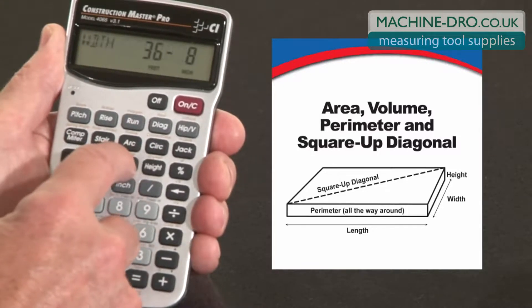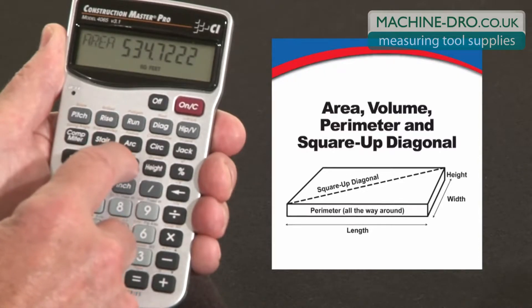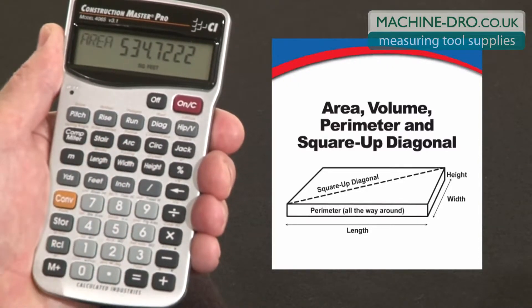I can come back to the width key. It confirms the width that we entered, 36 feet 8. Second press gives me the surface area, 534 square feet.